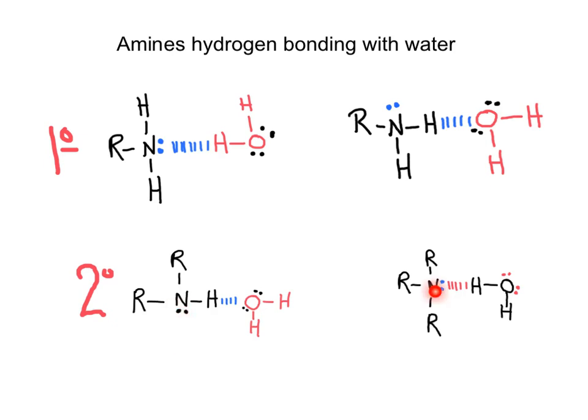In the case of a tertiary amine, we can only have a hydrogen bond acceptor where we have the nitrogen, because it has no hydrogens to be working as hydrogen bond donor.